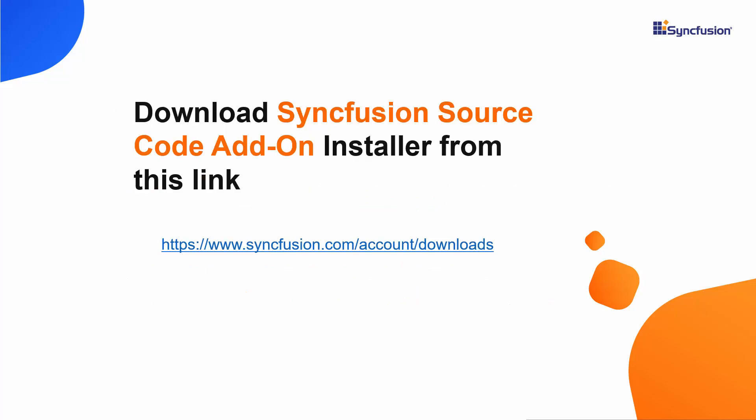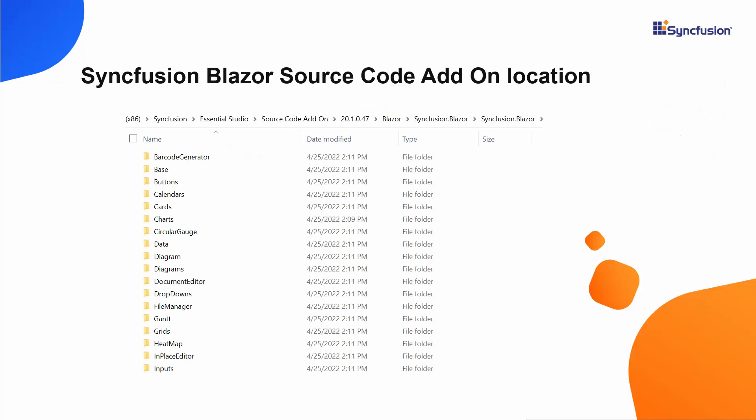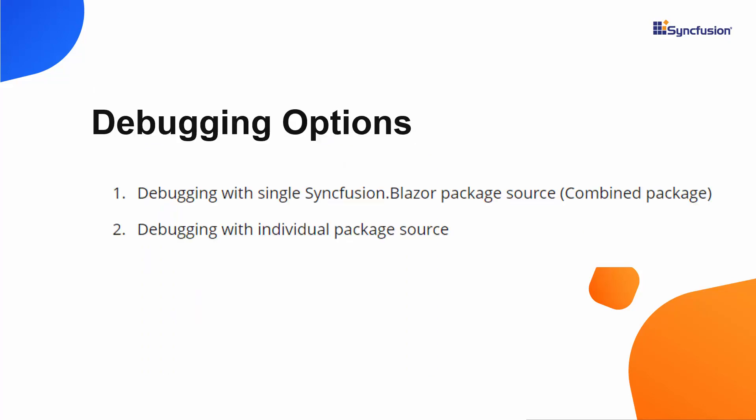To do that, first I need to install the source code add-on installer. If you want to know more about the source code add-on installer, click the video link shown in the YouTube card above. Once the installation is completed, the Syncfusion Blazor source code will be available in the following location. To debug the Syncfusion Blazor source code, you can use two options: one is with the Syncfusion Blazor single source package, and the other is with an individual package source.